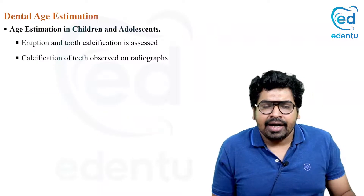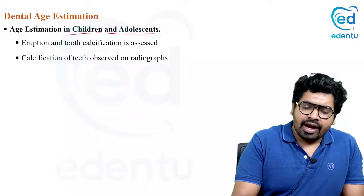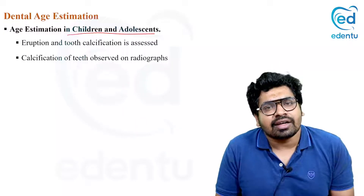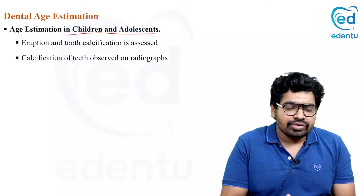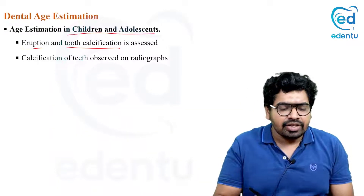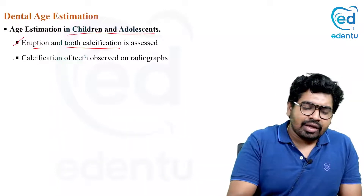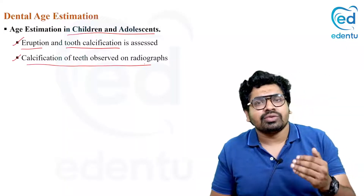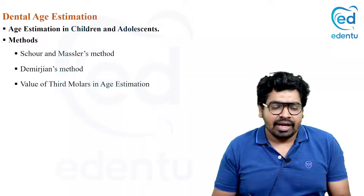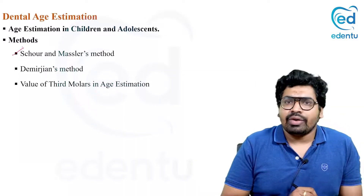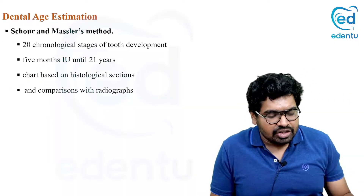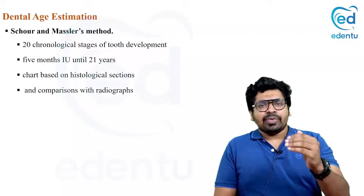For children and adolescents, you can use a dental chronological chart, examining eruption timing and tooth calcification periods to identify the child's age. Using a radiograph you can assess how much of the tooth is calcified. Three techniques are used: the Schour and Massler method, the Demirjian method, and the third molar estimation method.